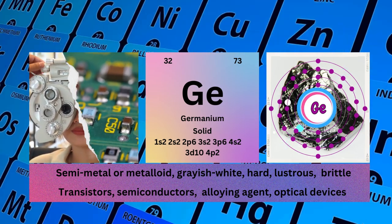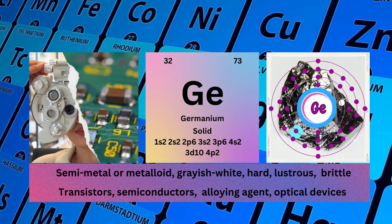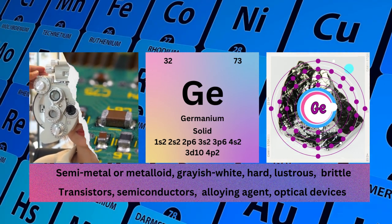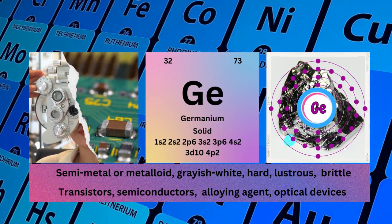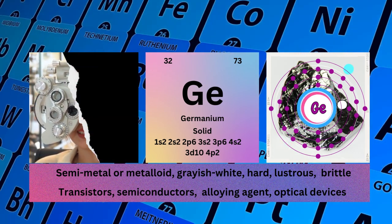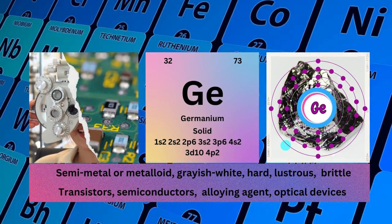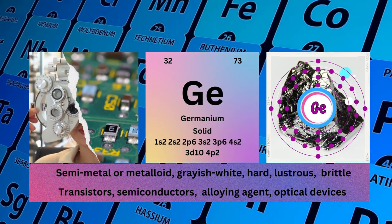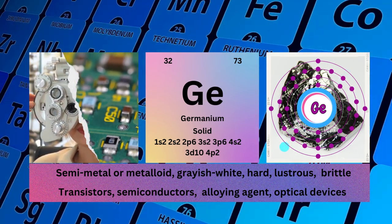Physical properties: semi-metal or metalloid, grayish white, hard, lustrous, brittle. Germanium used for transistors, semiconductors, alloying agent, and optical devices.